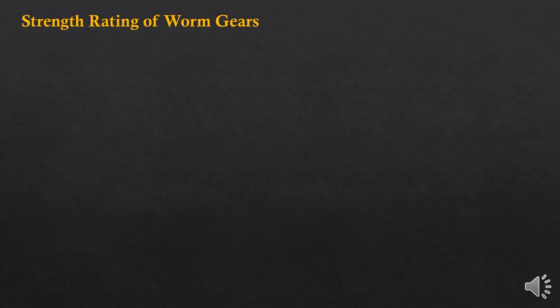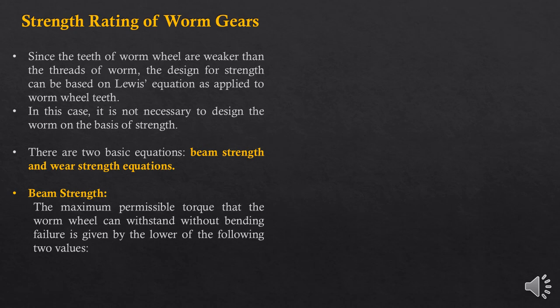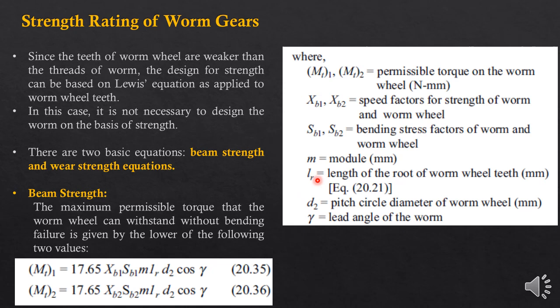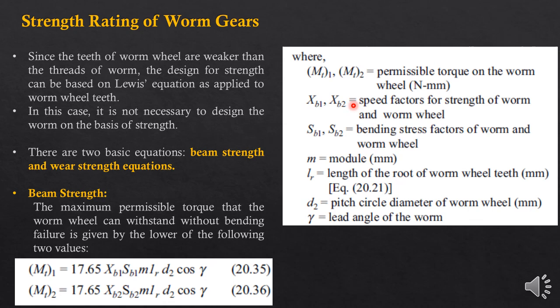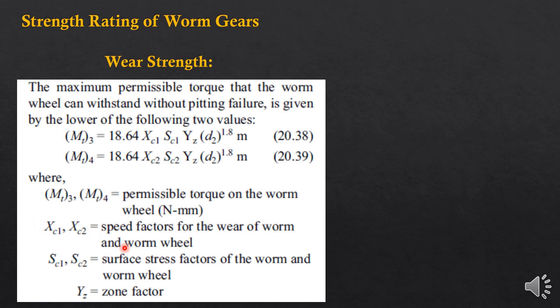Now having covered applications, terminologies, and forces involved in worm gears, let's look at strength. Similar to other gears, the gear tooth should have enough strength to prevent two failures: bending failure and wear failure. Therefore you have two strength equations: the beam strength equation and the wear strength equation. The beam strength equation is a form of the Lewis equation, and the various factors involved are shown. For wear strength you have two formulas available in your handbook.